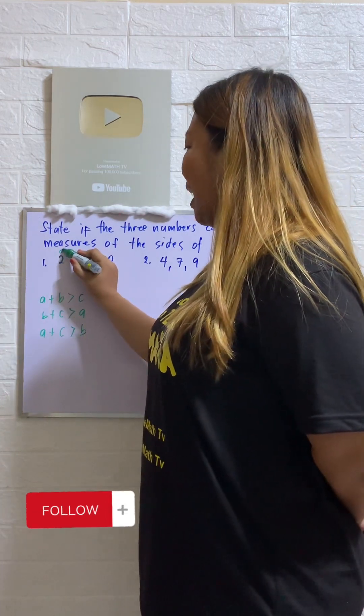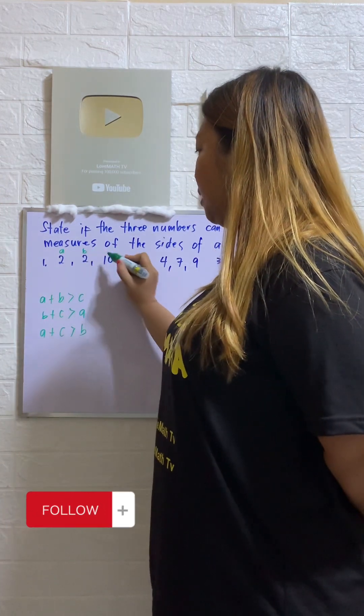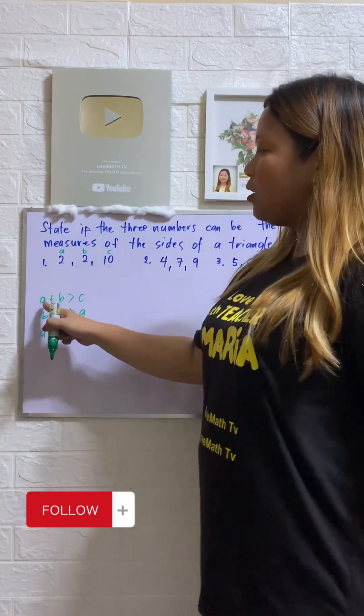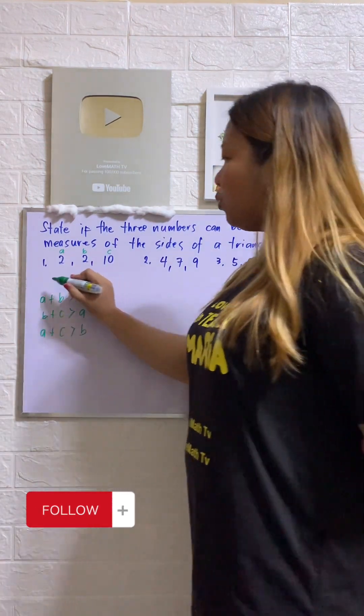So this one, let's name it as side A, this one is side B, this one is side C. Let's try! What is our A? A is 2.